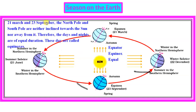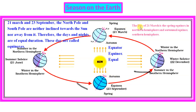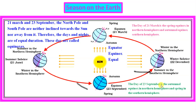21st March and 23rd September are known as equinoxes — when day and night are equal. The 21st March is the spring equinox in the northern hemisphere and the autumnal equinox in the southern hemisphere. And 23rd September is the autumnal equinox in the northern hemisphere and the spring equinox in the southern hemisphere.